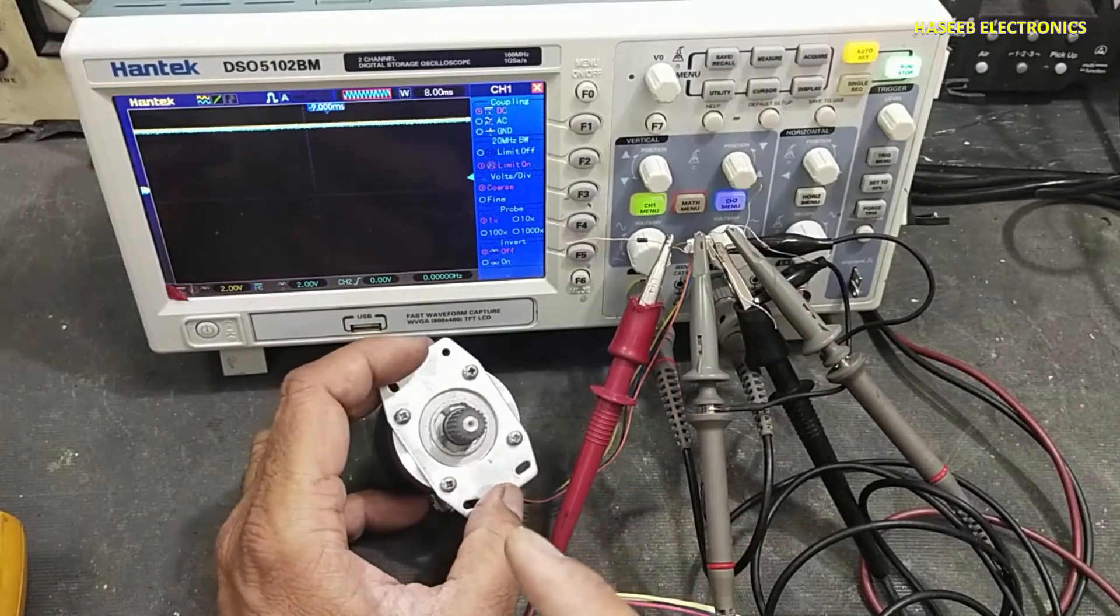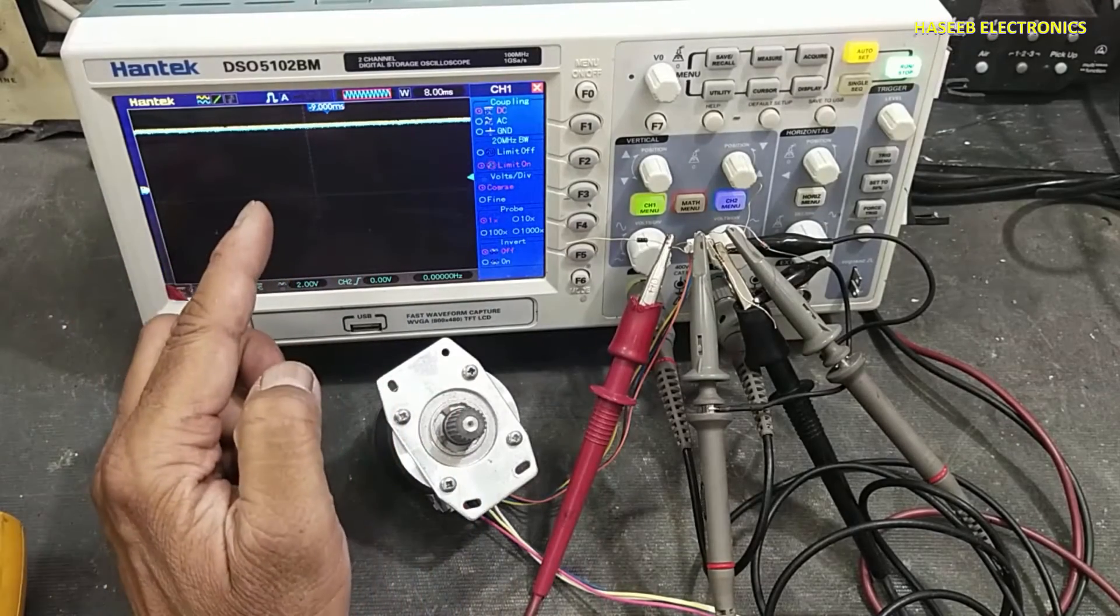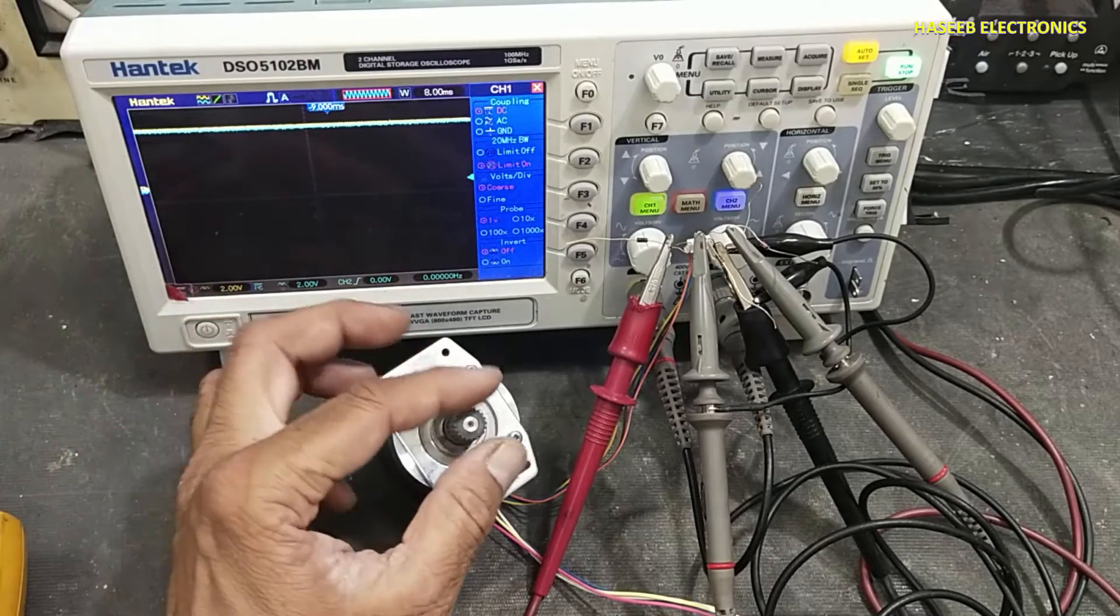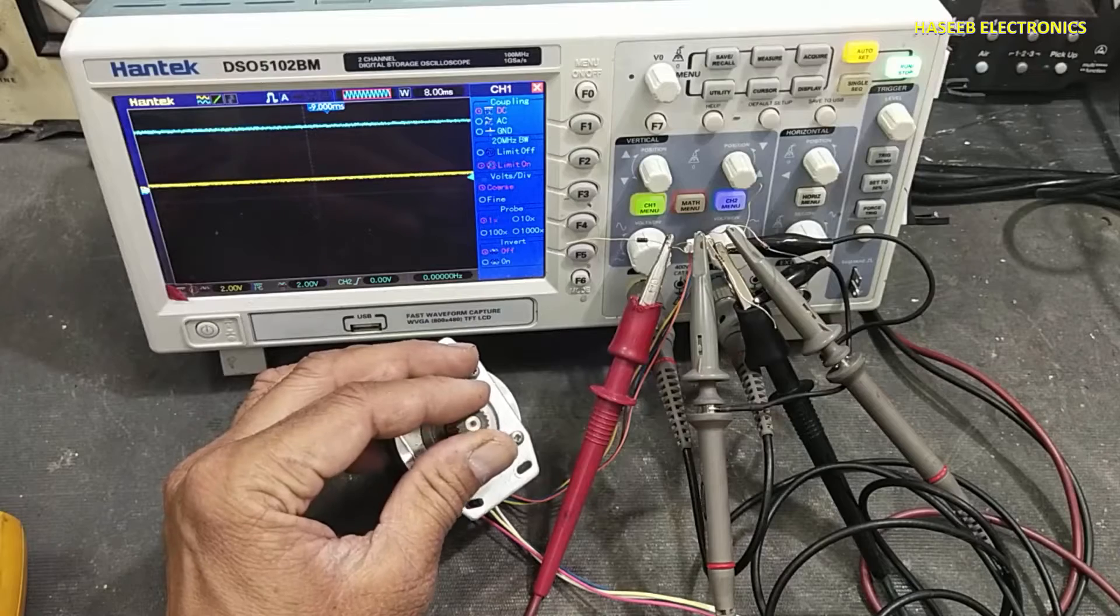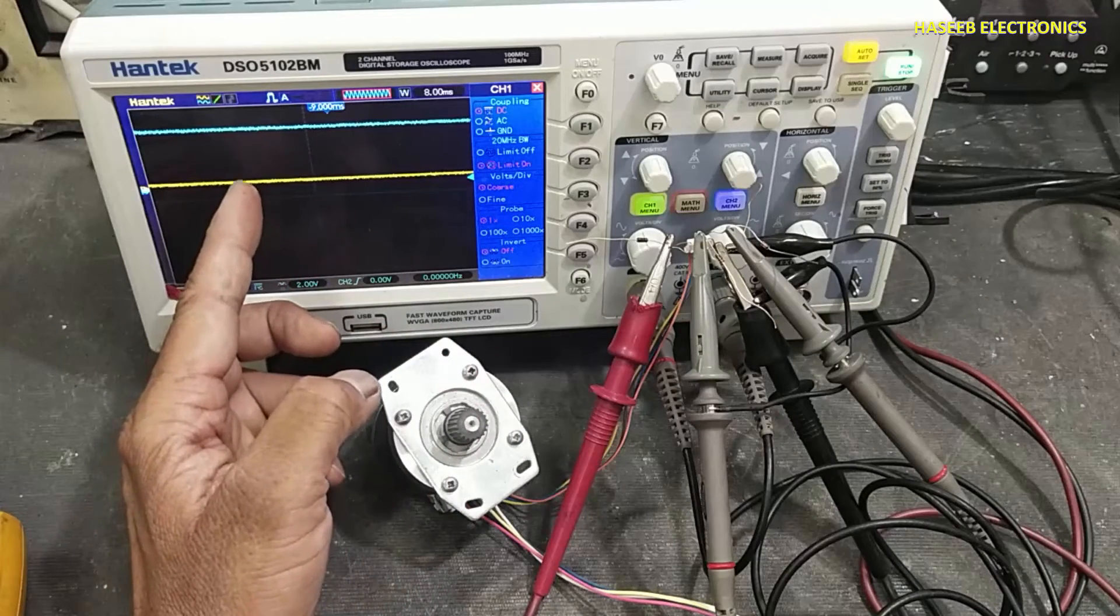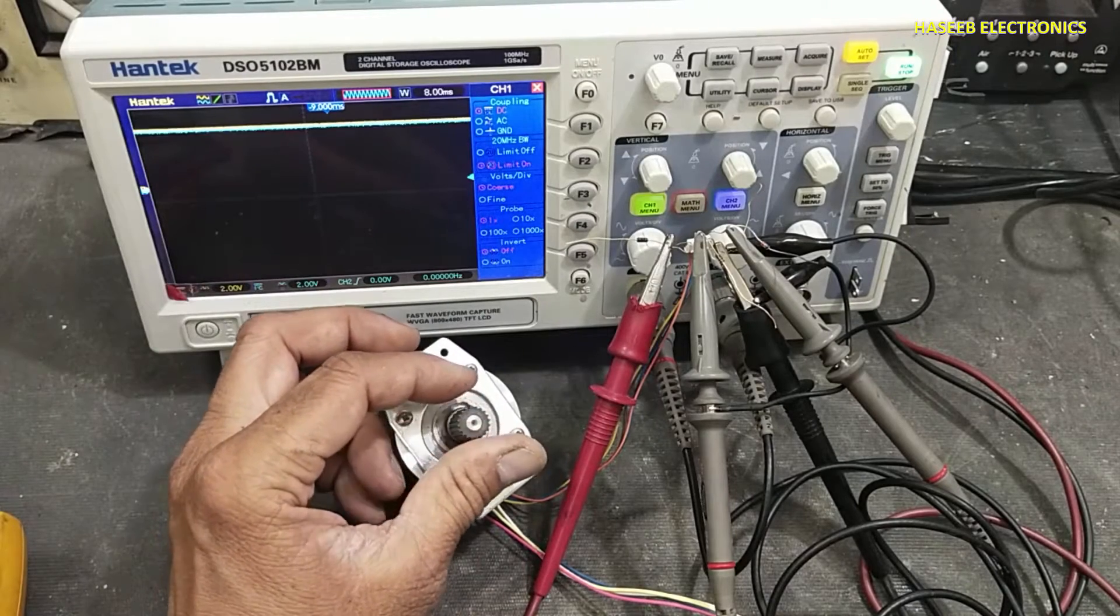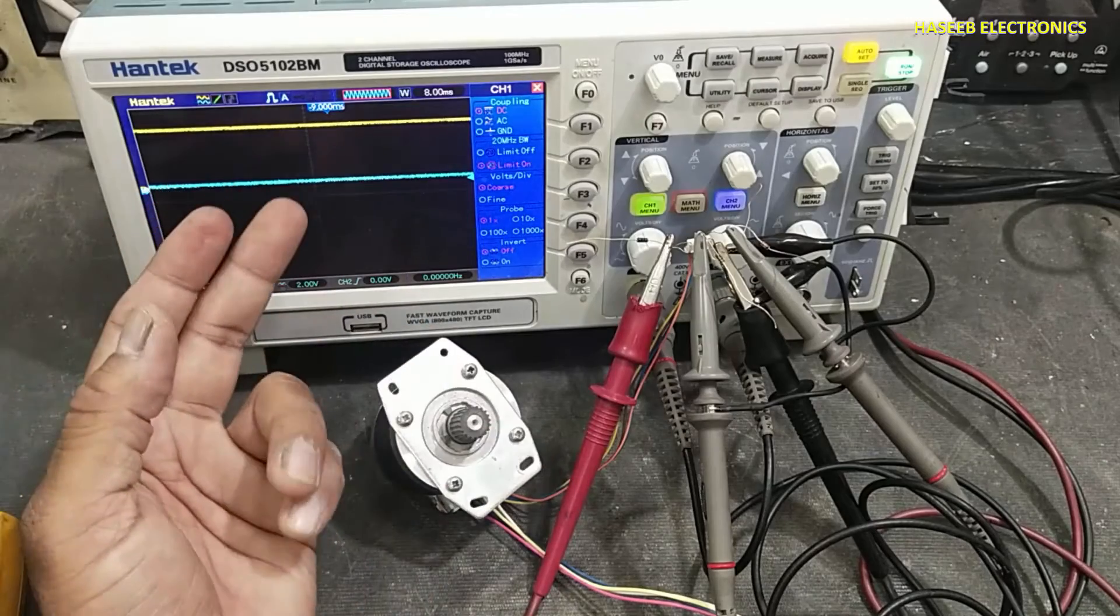For a good optical encoder, in the initial stage, both outputs might be high or both outputs might be low, depends on the encoder position. Channel A is low, channel B is high. Sometimes channel B will be low and channel A will be high.